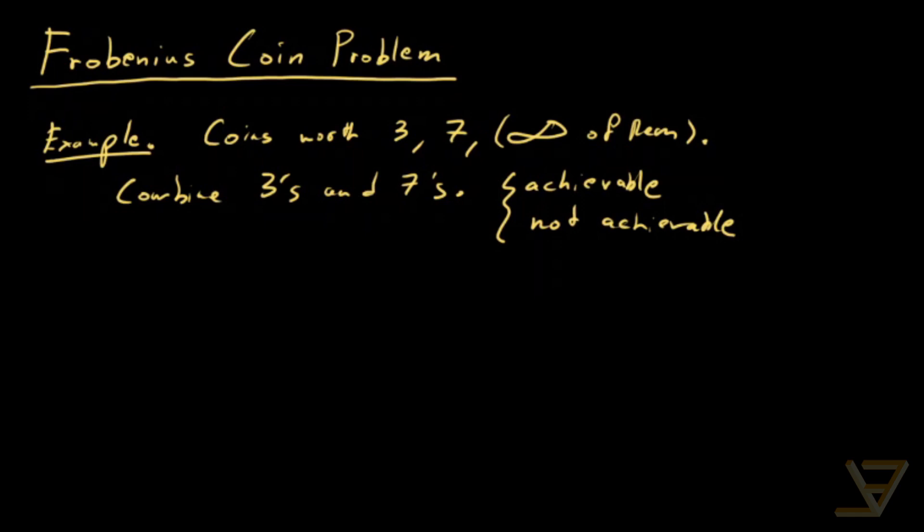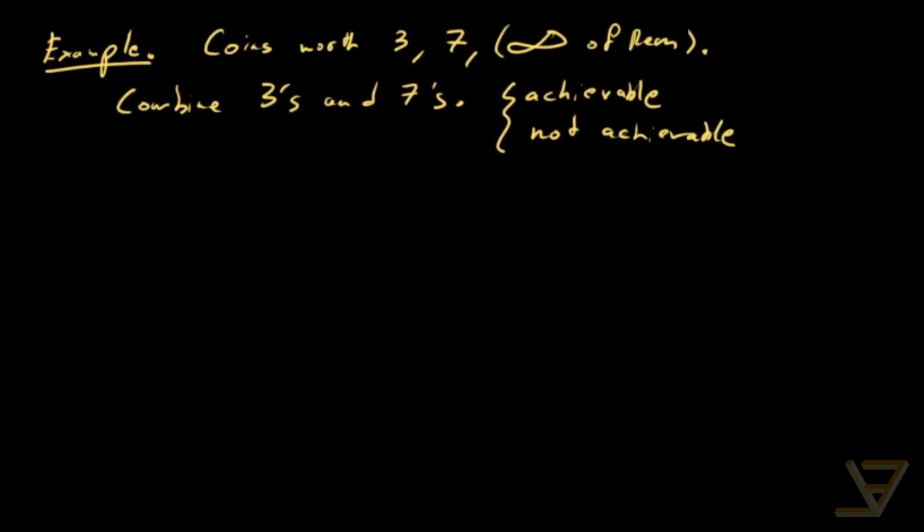This originally comes from a problem where there was a certain number of Chicken McNuggets being sold and there were two or three denominations and somebody was wondering what are all the possible achievable combinations and what are non-achievable combinations. So we're just working with 3 and 7 in here.